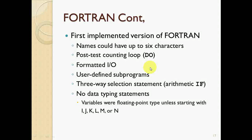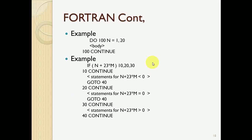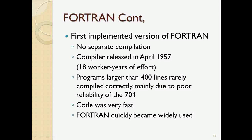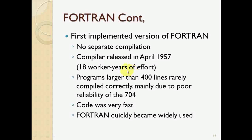The first implemented version of FORTRAN had formatted input and output, subroutines, and non-data typing statements. Variables of floating point type begin with I, J, K, L, M, or N. An example FORTRAN code defines a DO loop with a body and a CONTINUE statement. In early FORTRAN, this structure was very common, but now we use constructs like WHILE and FOR loops instead. The first implementation had no separate compilation but compiled very fast, and FORTRAN quickly became widely used.